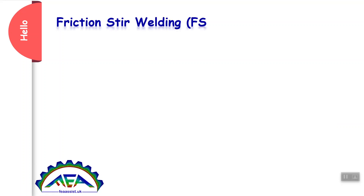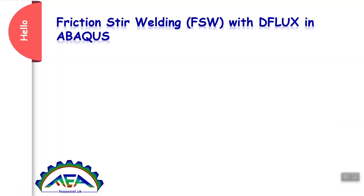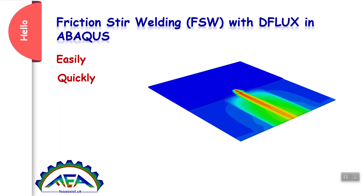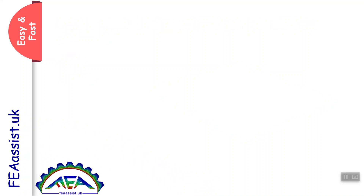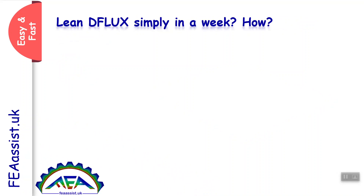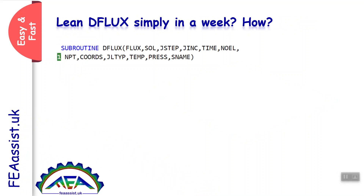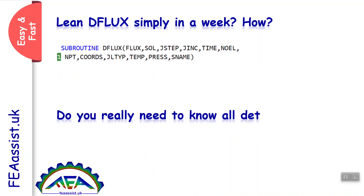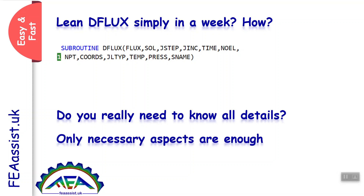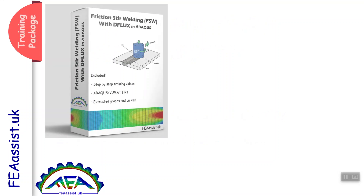Hello, here we want to explain friction stir welding (FSW) with DFLUX subroutines in Abacus. You can learn it easily and quickly. Abacus has many variables, but do you really need to understand all details to solve your problem? Of course not. By focusing on your formulation and variables, you can save your energy and your time. To this end, we have prepared the FSW training package for you.